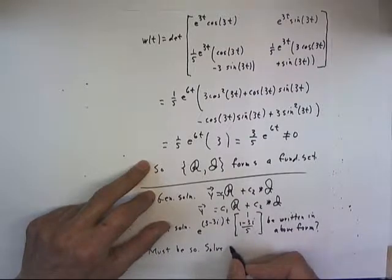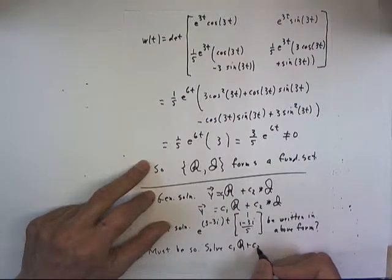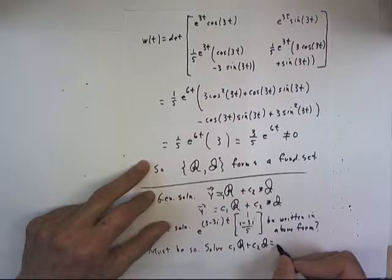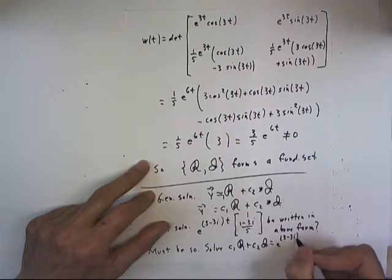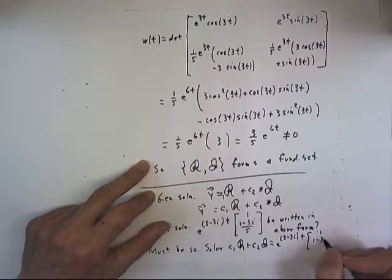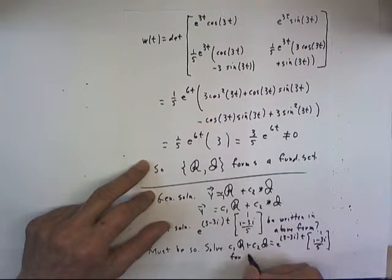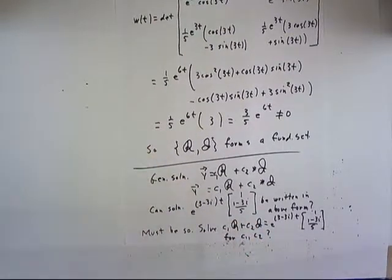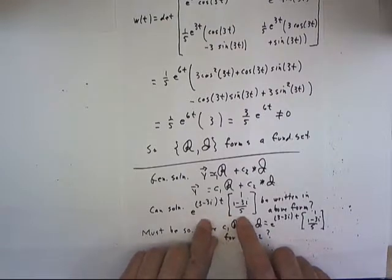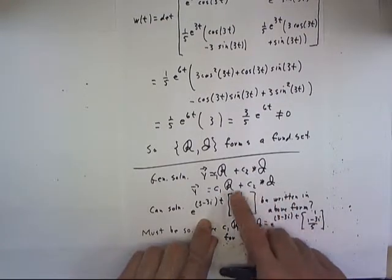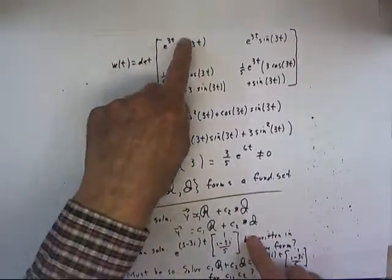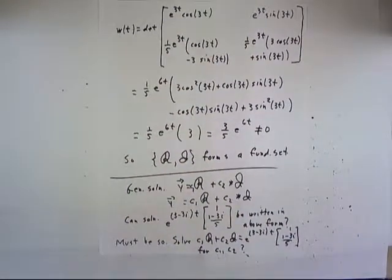So, can we solve C1 R plus C2 script I equal e to the 3 minus 3i t times 1, 1 minus 3i over 5 for C1 and C2? That's written kind of small, but you heard what I said. I'm not going to do that. I'm not going to take the time. I'm not going to fill up valuable disk space doing this. It wouldn't take class time to do this. I'll pose this as a suggested problem. Prove that this solution can be put in this form where the R and I solutions are this column and this column of our psi matrix.